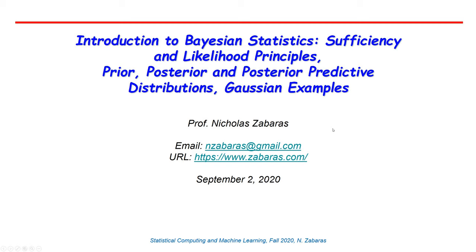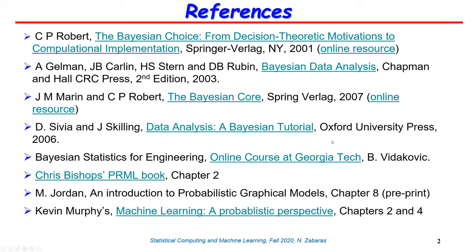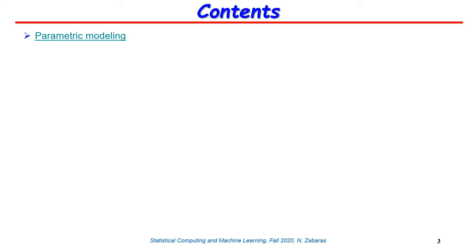Before we begin, there are a number of references on this slide related to Bayesian inference. I am not going to go through the details, but I think all of them are useful resources that provide a lot of information relevant to this course. We are going to start by reintroducing the problem of parametric modeling that we have already seen in the context of maximum likelihood estimators.